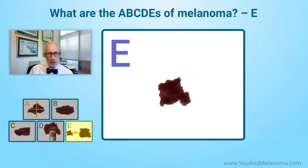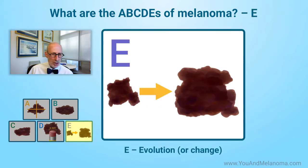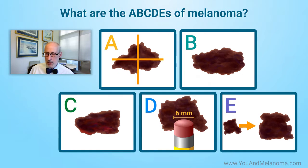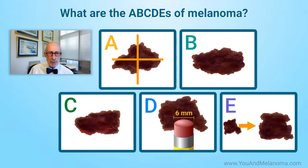Finally, E is for evolving or changing. A mole that gets raised, gets new color, bleeds, or changes shape — that's when you begin to worry. So those are the ABCDEs. And you begin to worry about the ABCDEs in different parts of your body, depending on whether you're male or female.